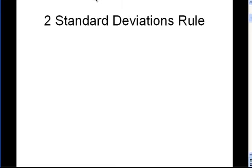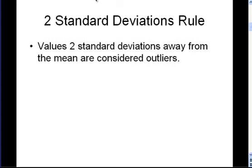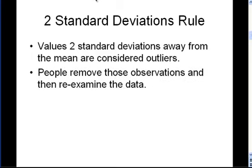And the rule that I'm talking about is the two standard deviations rule. This rule states that values two standard deviations away from the mean are considered outliers. And people in the process of using this rule will remove observations in their data that correspond to two standard deviations or greater.